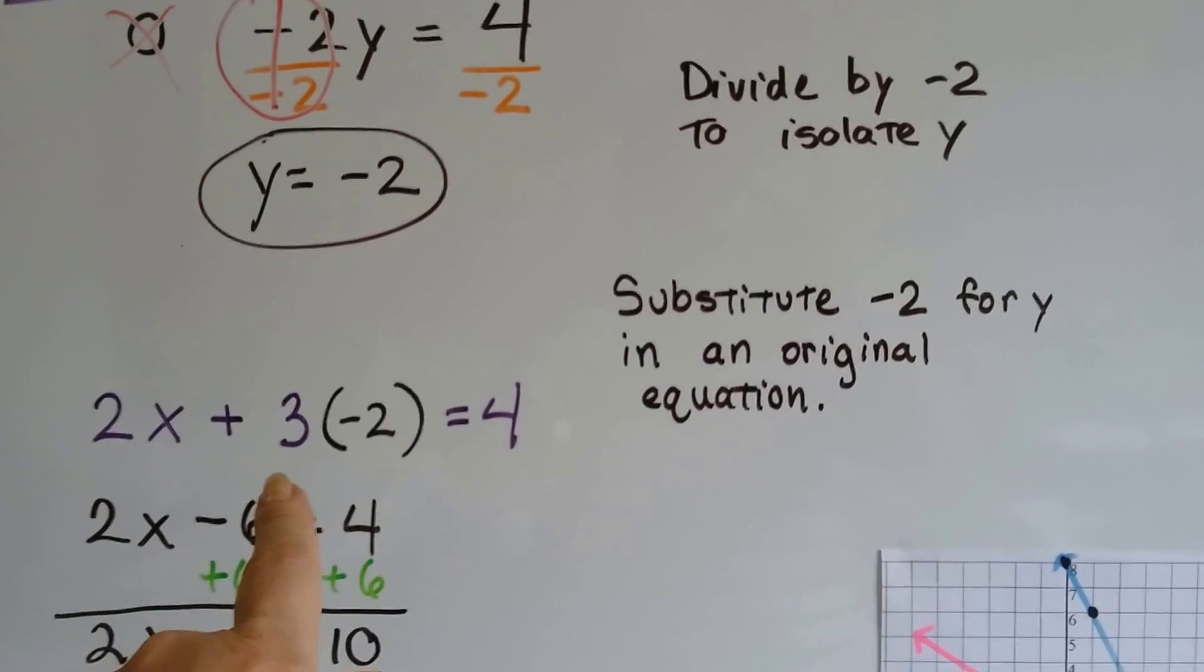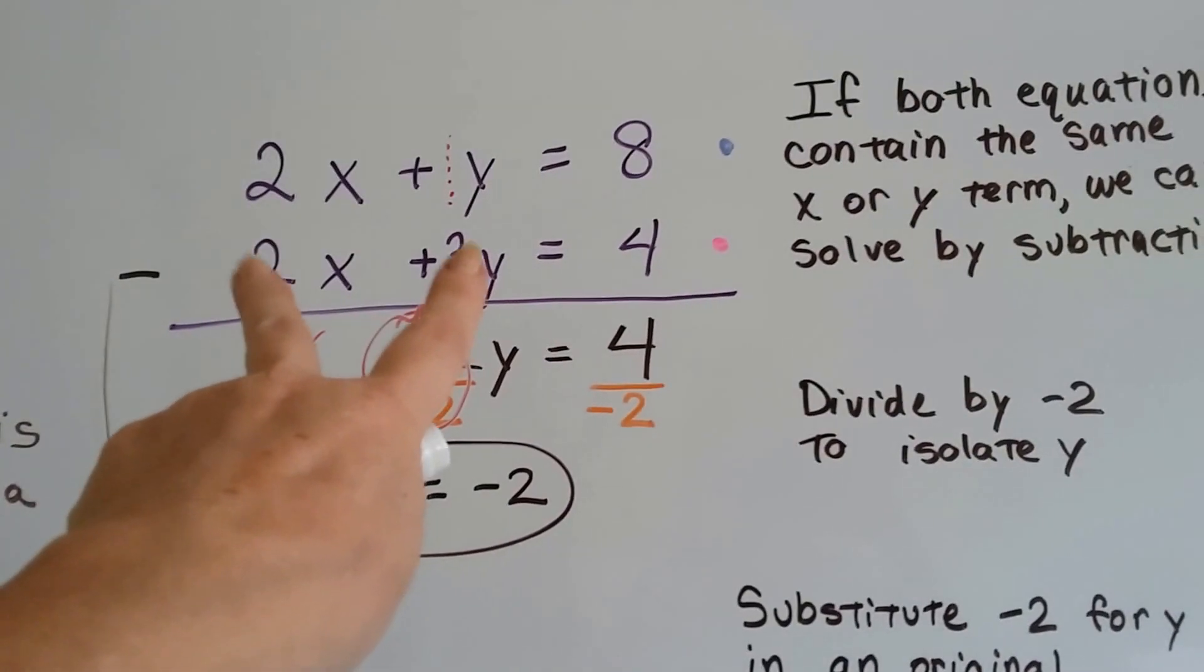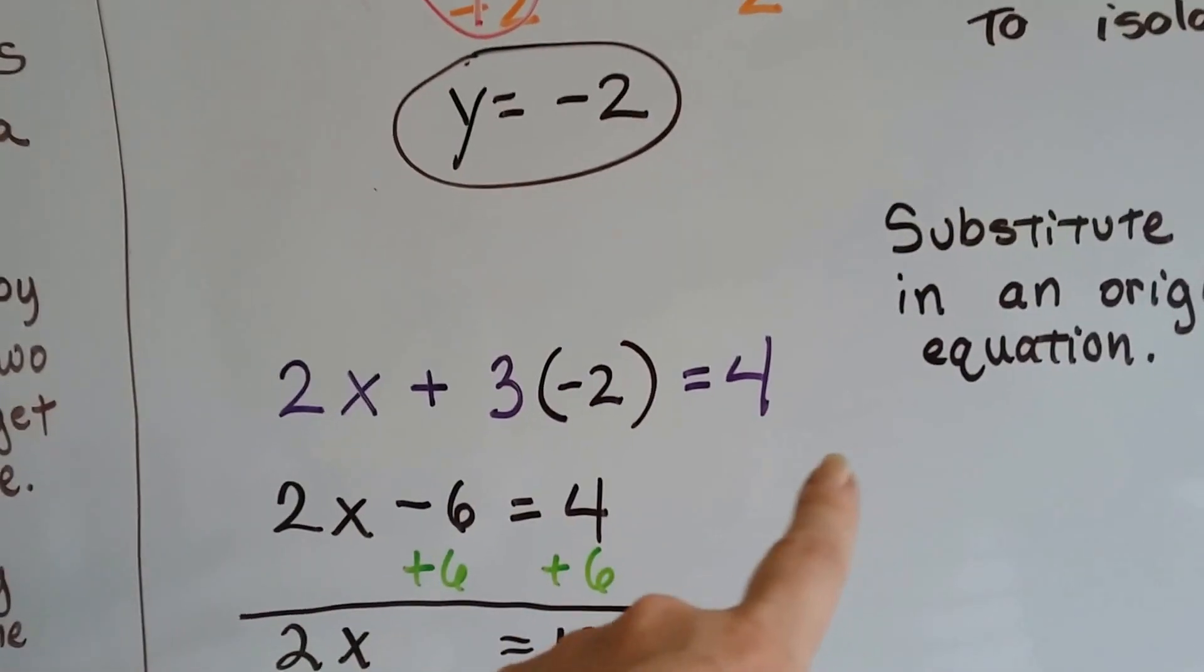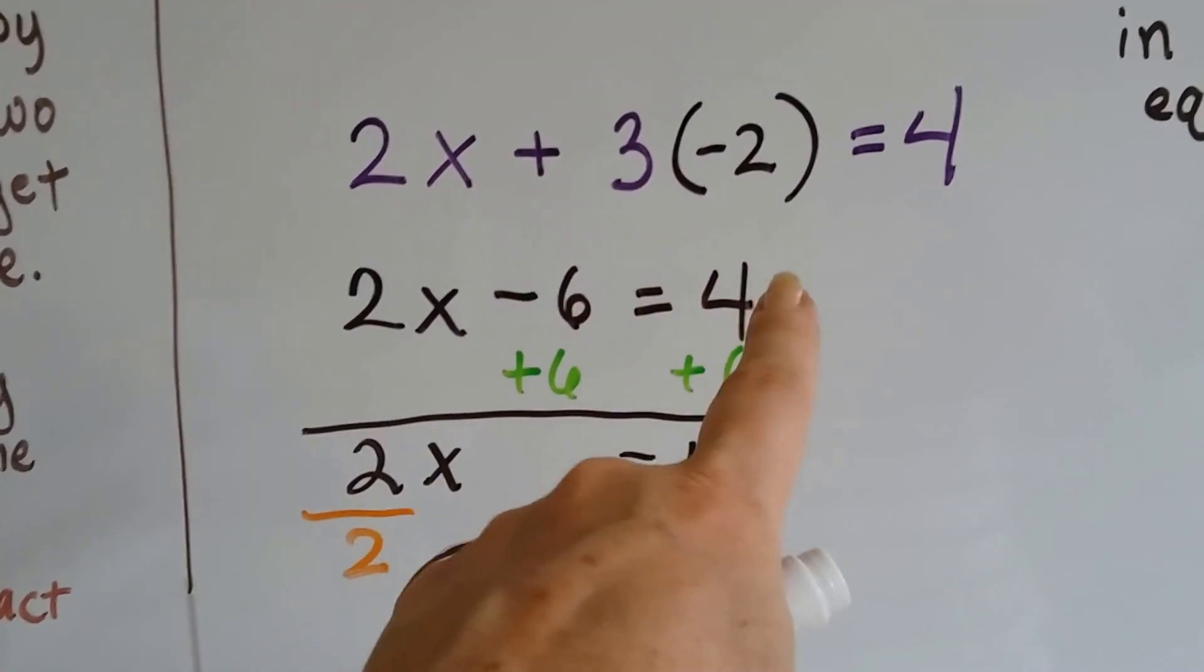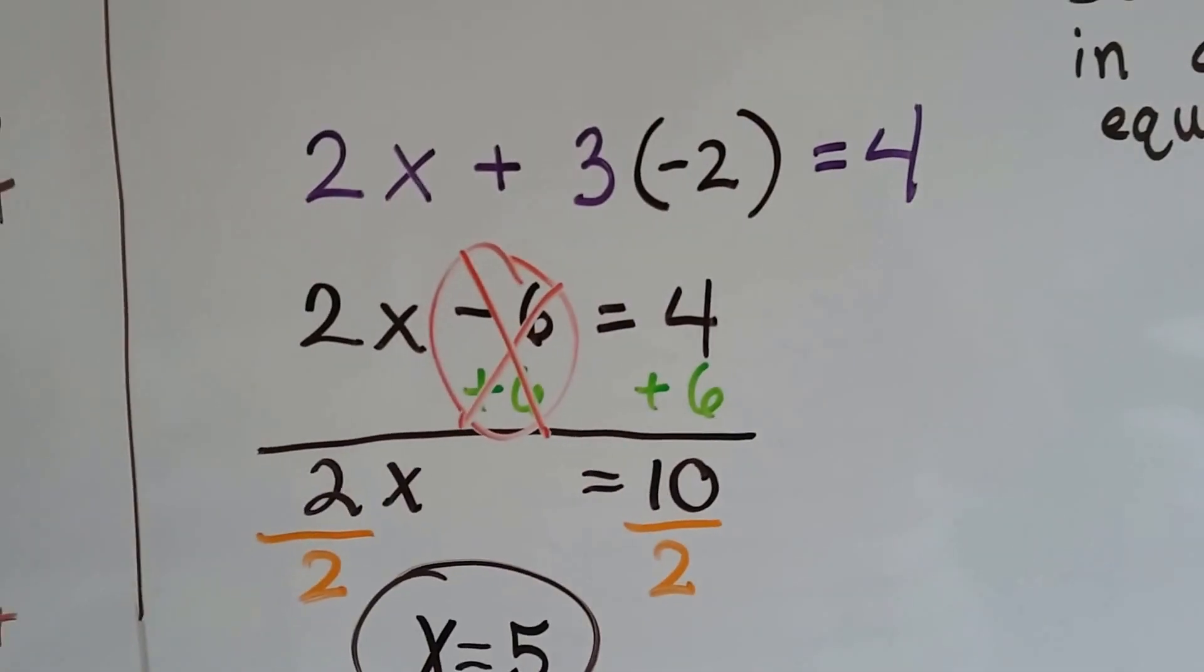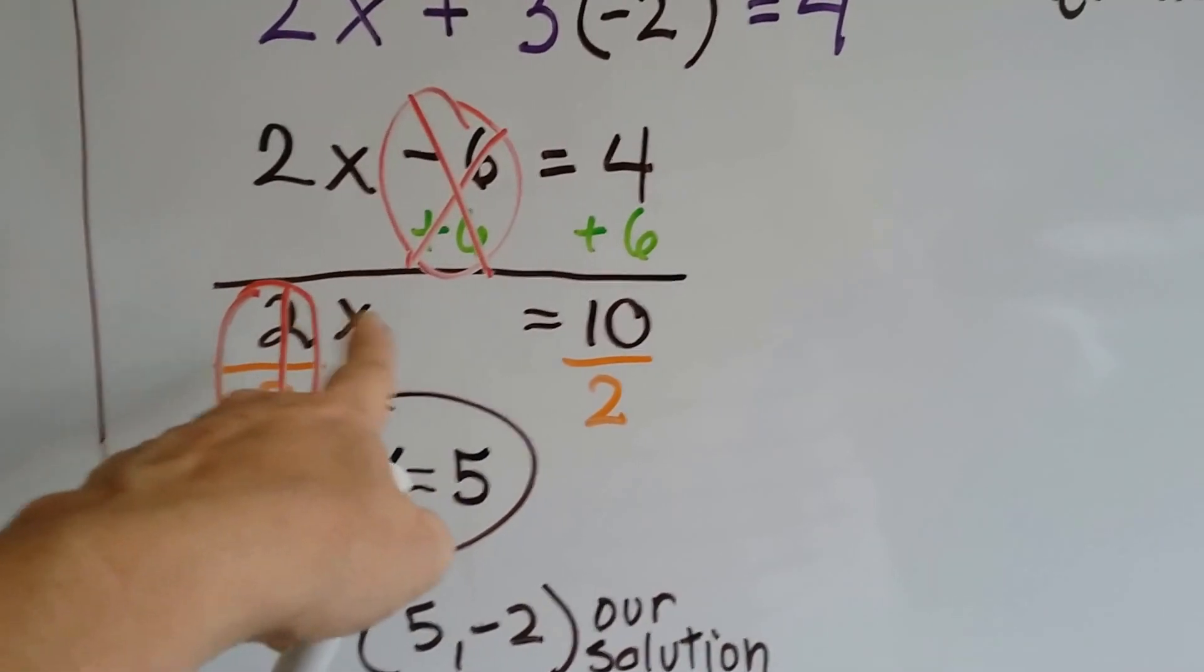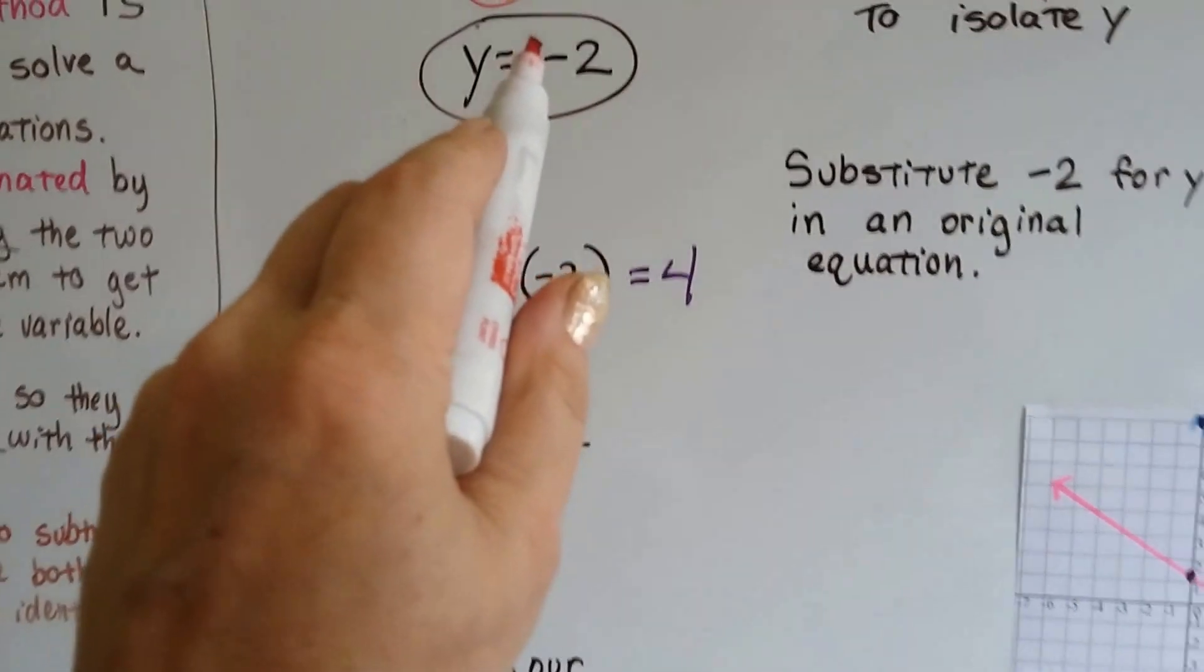We can substitute that negative 2 in for y in an original equation. So I chose the one that has both variable terms with coefficients. So 2x plus 3 times negative 2 in place of the y equals 4. Well that 3, positive 3 times a negative 2 is a negative 6. So that gives us 2x minus 6 equals 4. We can add 6 to each side to get rid of that negative 6. And 4 plus 6 is 10, so we have 2x equals 10. Divide both sides by this 2 as an inverse operation to that multiplication, and we get 1x equals 10 divided by 2 is 5.